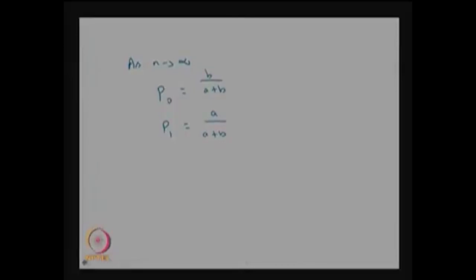This can be visualized from the state transition diagram. As the system keeps moving between states 0 and 1 with probabilities a and b and self-loops 1-a and 1-b, in the long run the system is in state 1 with proportion a/(a+b) and in state 0 with proportion b/(a+b).